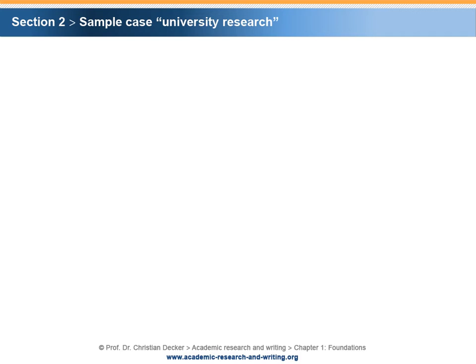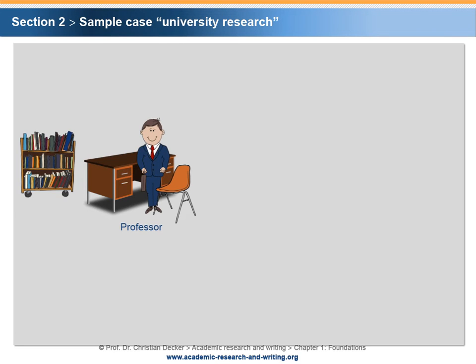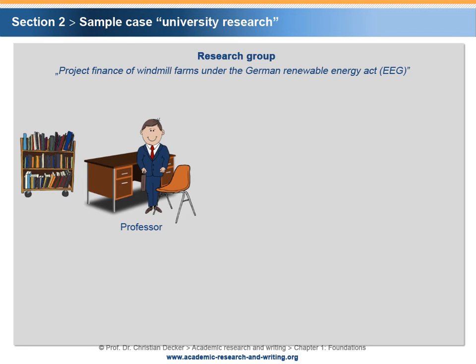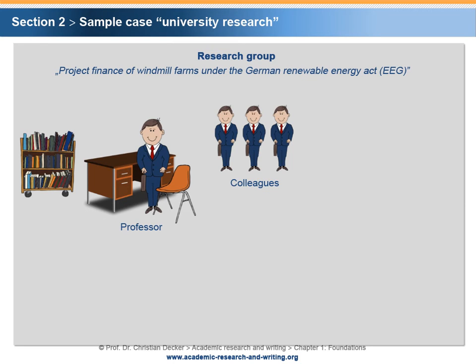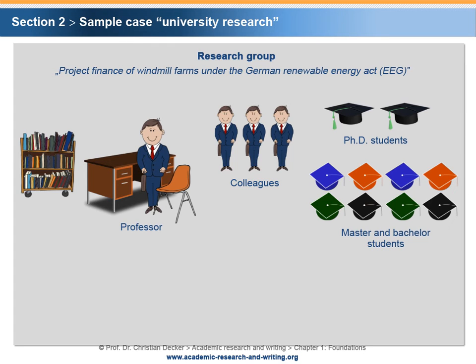The second sample case uses again the topic of windmill financing. It exemplifies potential research activities at universities. A university professor has formed a research group themed "Project Finance of Windmill Farms under the German Renewable Energy Act." The research group encompasses the professor who formed it as well as several colleagues. In the course of the project, the professors decide to integrate several PhD, Master and Bachelor students in the research work.